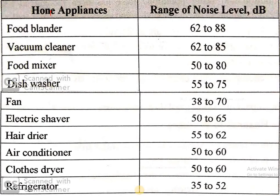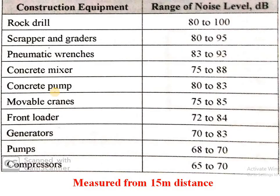For home appliances, the range of noise level is 35 to 88 decibels — including refrigerators, cloth dryers, air conditioners, pans, vacuum cleaners, and food blenders. For construction equipment, the range is 65 to 100 decibels. Rock drills, pneumatic wrenches, scrapers, and graders create maximum noise in this category. These decibel levels are measured from a 15-meter distance.